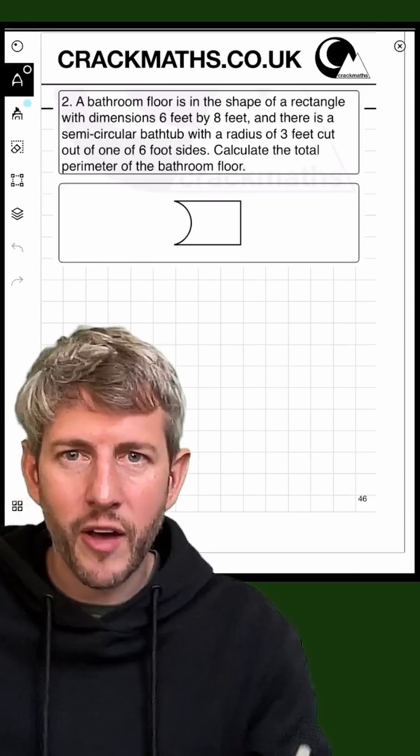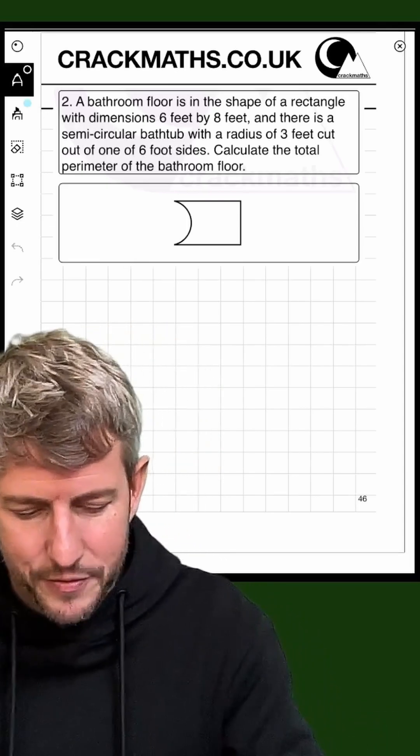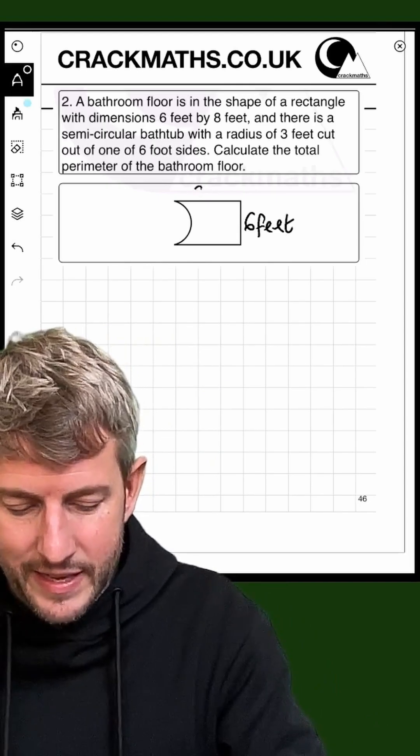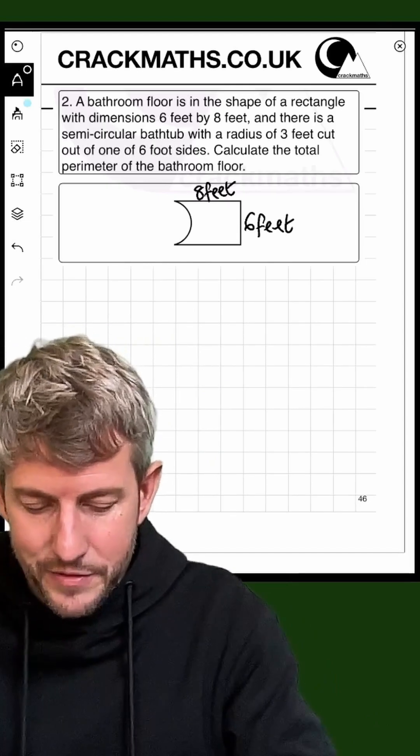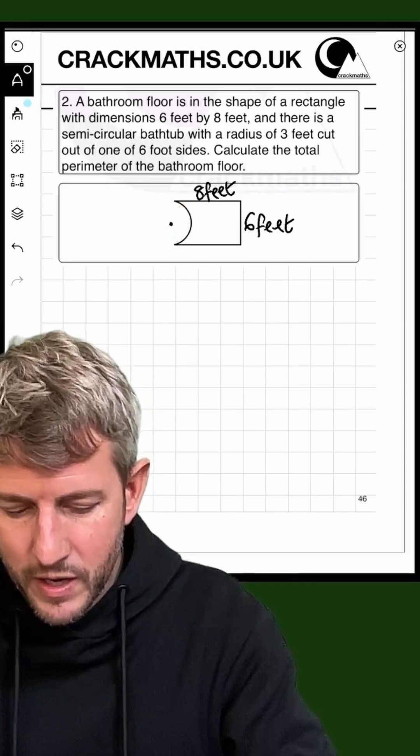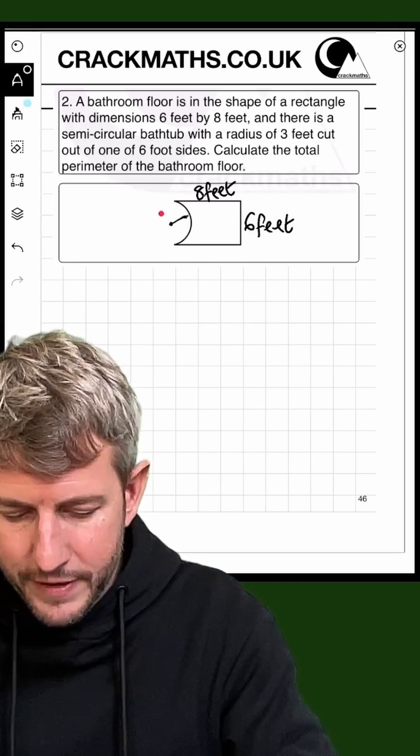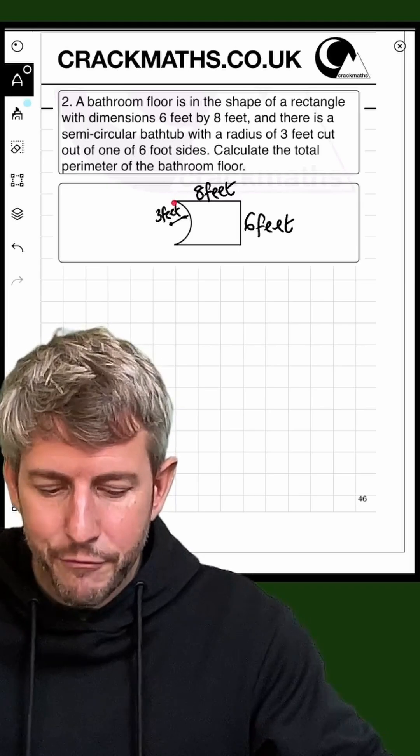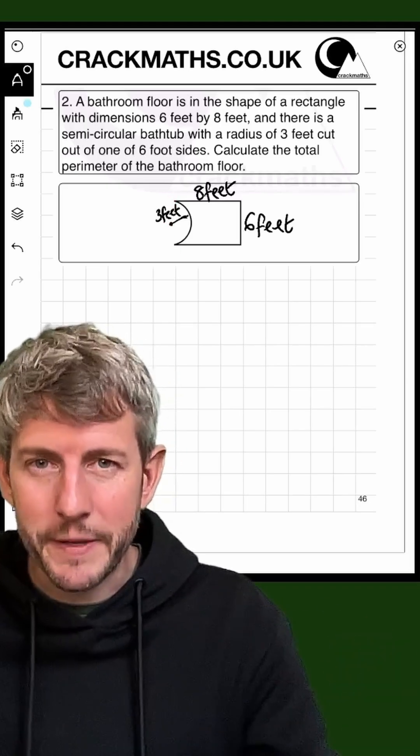This means that this is 6 feet, this is 8 feet, and this is the semi-circular bathtub with a radius of 3 feet. That makes sense because if the radius is 3 feet, 3 feet plus 3 feet would be 6 feet.